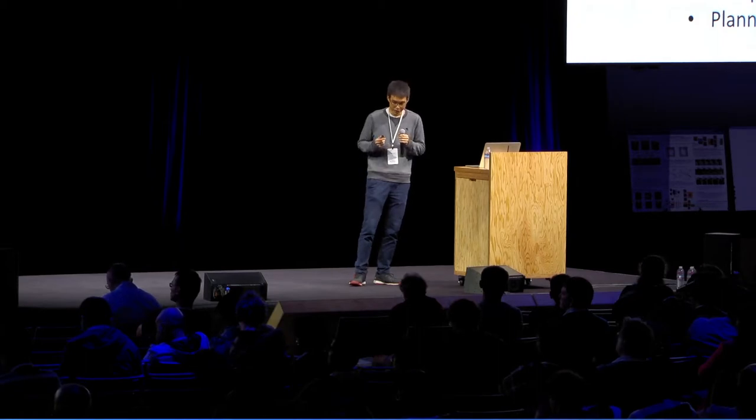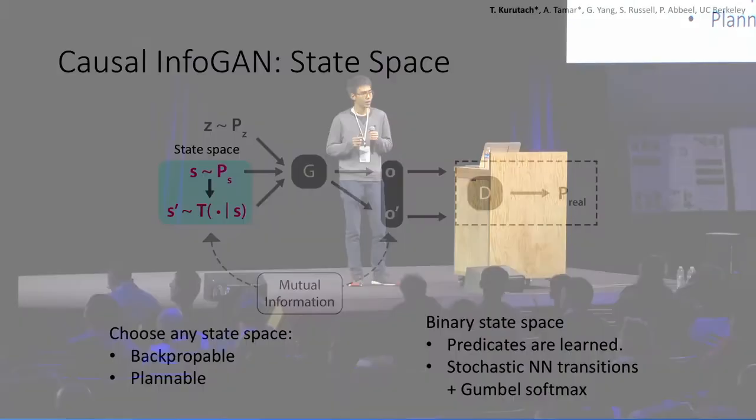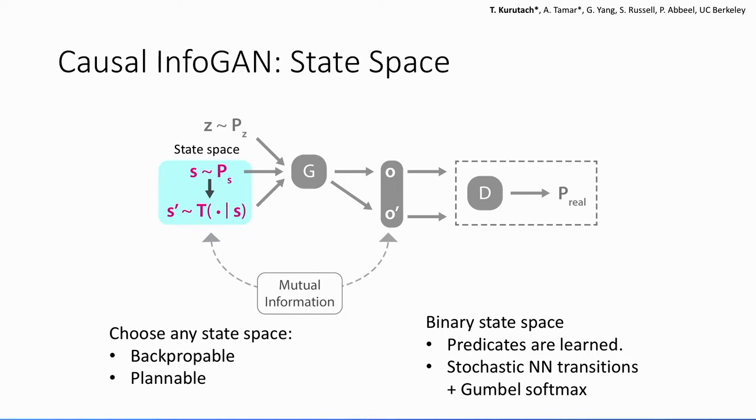So this is a very interesting example that we look at this binary state space, because you can think of each dimension in the state as a predicate that we are trying to learn from the images. And in this binary state space, we use a stochastic neural network transition and Gumbel softmax for it to be back-propagable.